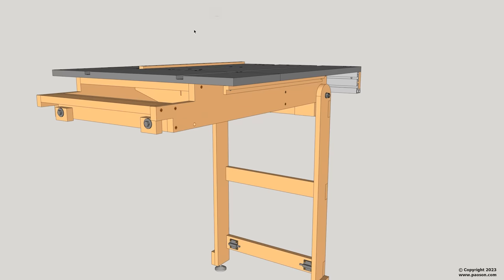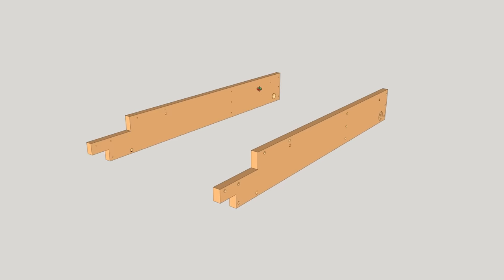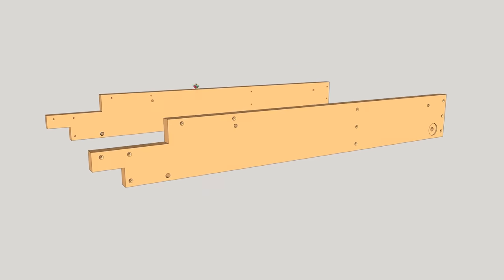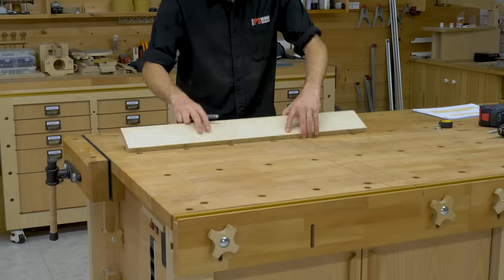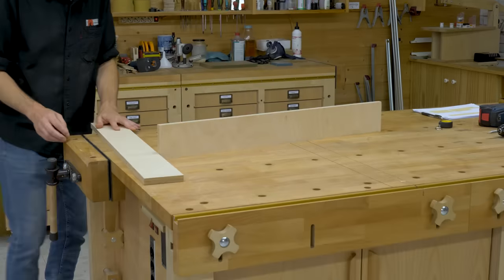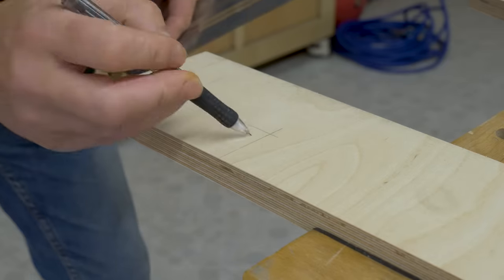Now I'll show you how to build this folding outfit table. I'll start by making the sides of the table frame. First, I'll mark all the cuts following the plans, so that I can cut them on the table saw.